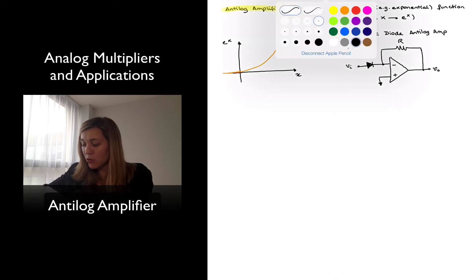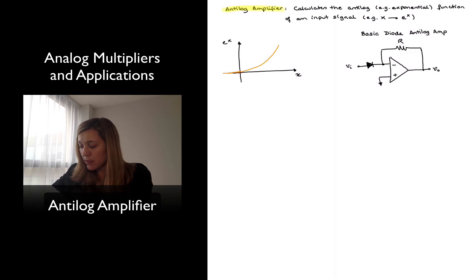The analysis is going to be very similar. We know that because this is an ideal op-amp, the current flowing through this diode, Id, must be equal to the current flowing through this resistor, Ir. By KCL, Id equals Ir.